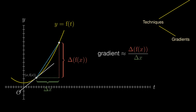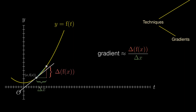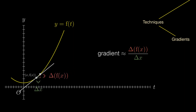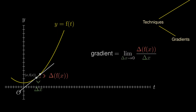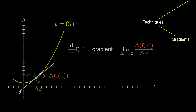Let this delta x get smaller and smaller and smaller. And in the limit, when delta x approaches zero, we will obtain the actual gradient of the curve at the point. This is called the derivative of the curve, and it is denoted by the symbol d over dx.